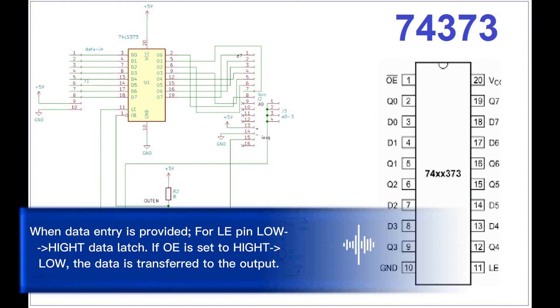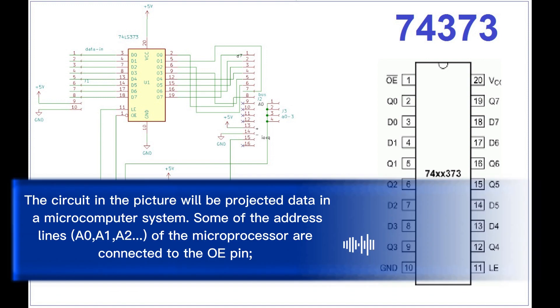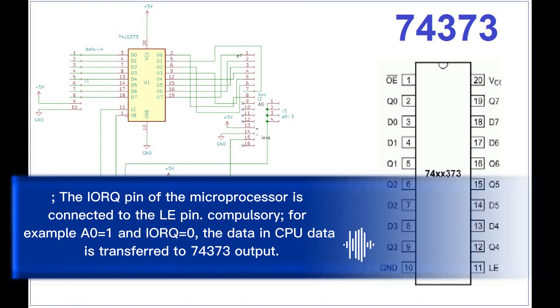The circuit in the picture will be projected data in a microcomputer system. Some of the address lines A0, A1, A2 of the microprocessor are connected to the OE pin. The IORC pin of the microprocessor is connected to the LE pin.